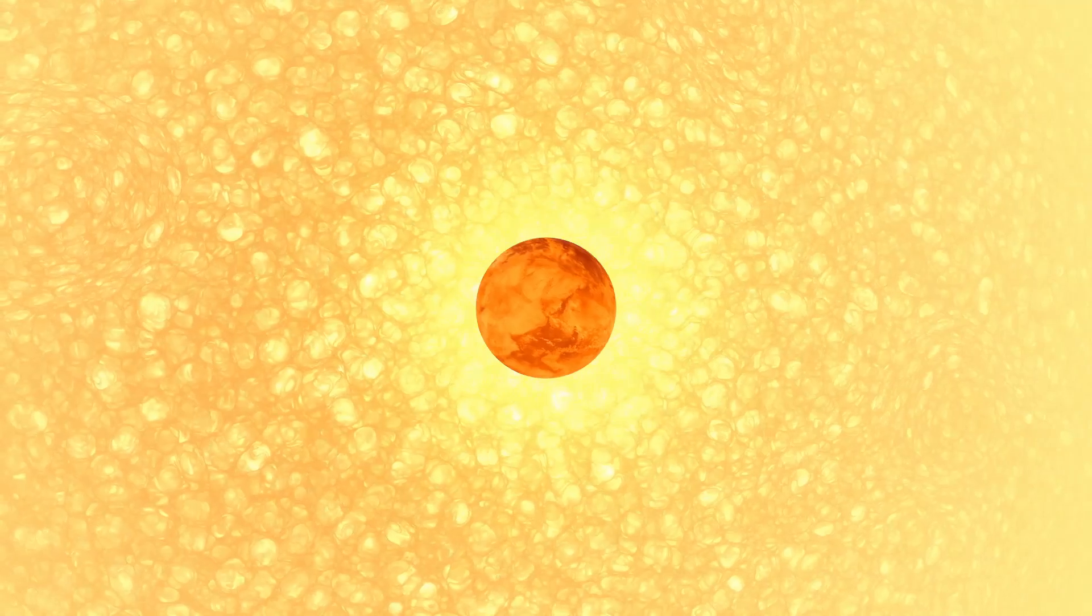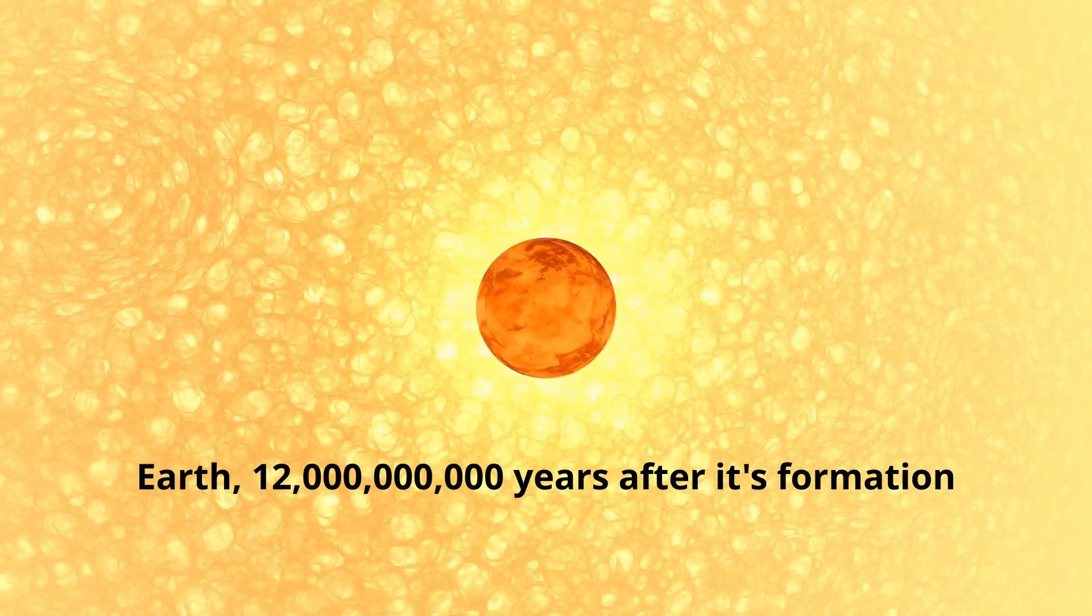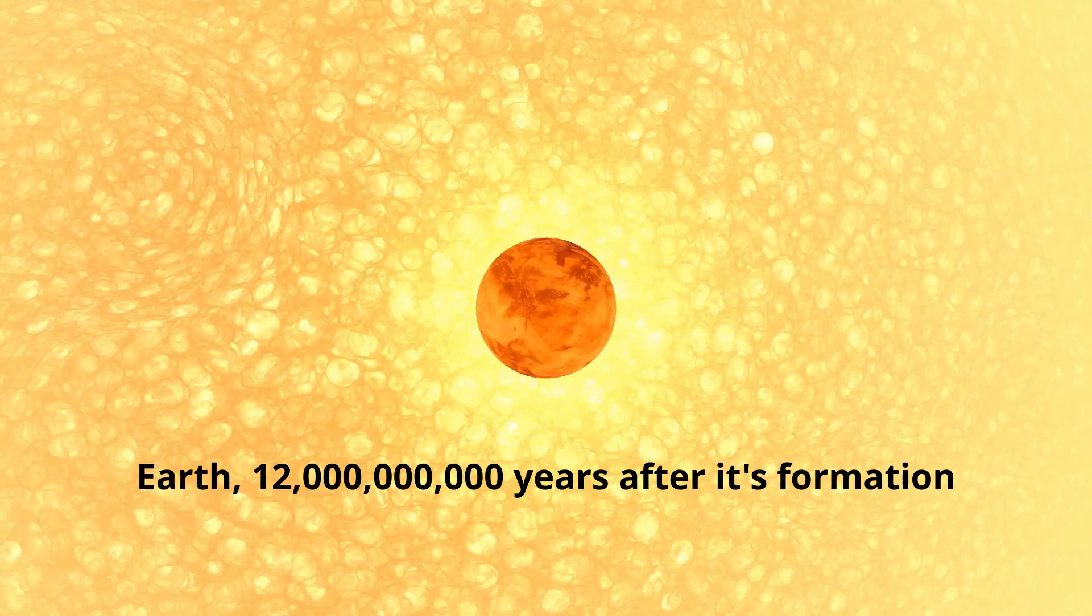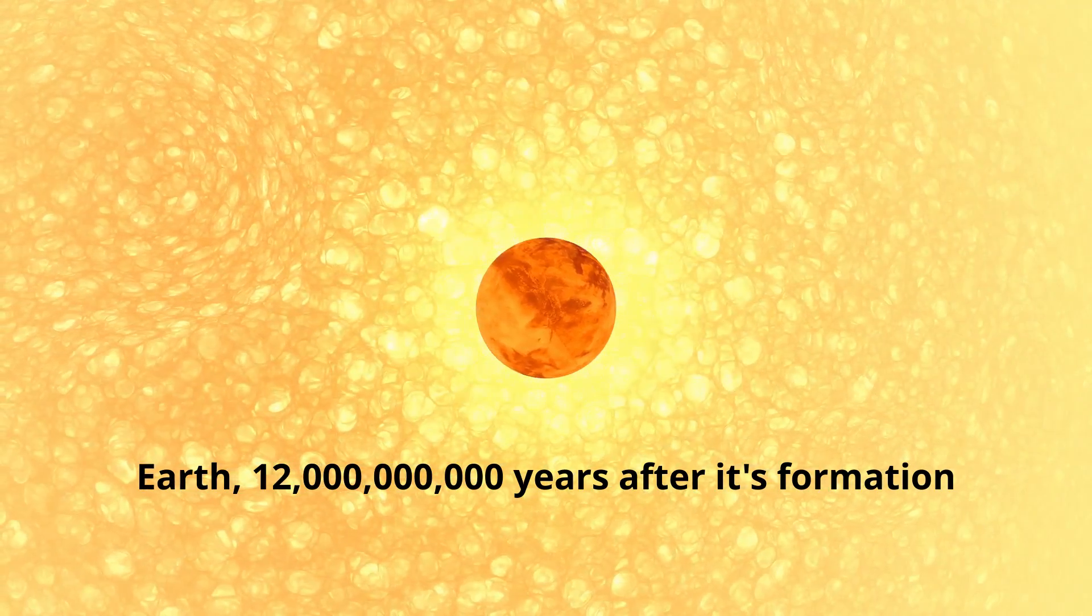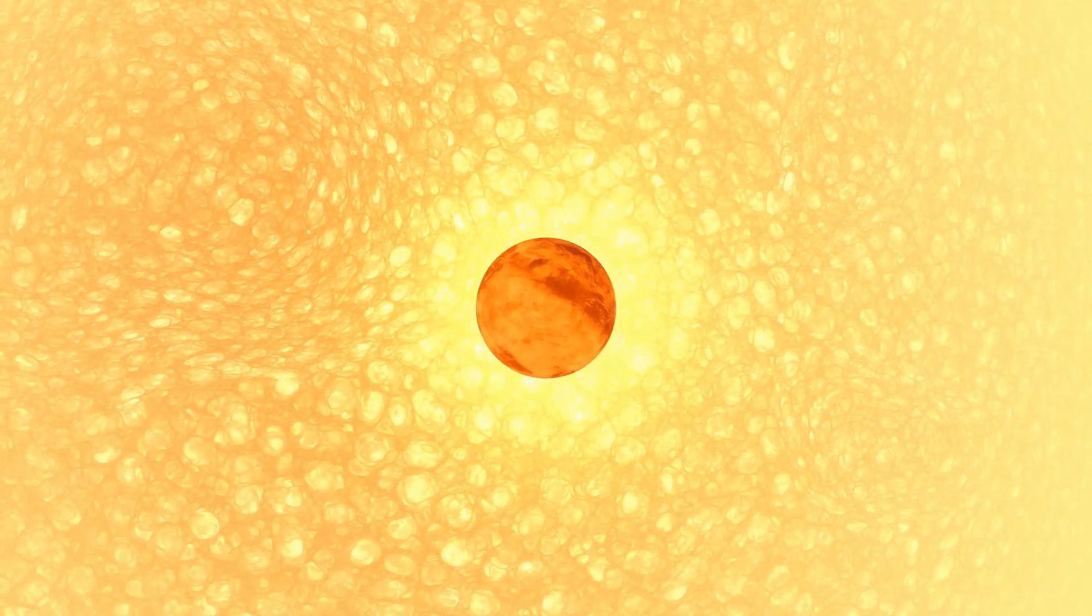In the far distant future, as our Sun begins to age and becomes a red giant, it is expected that more orbital instability will take place, mostly with the inner planets, predicting several scenarios where Venus or Mercury could potentially collide with Earth. The Sun is also expected to consume Mercury, Venus, and maybe even Earth if the aforementioned chaos does not occur.